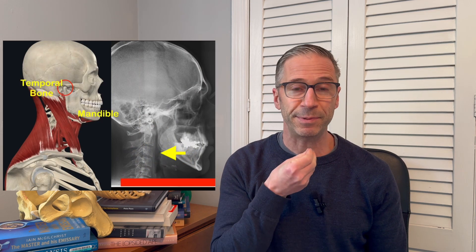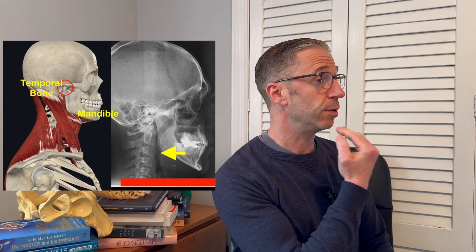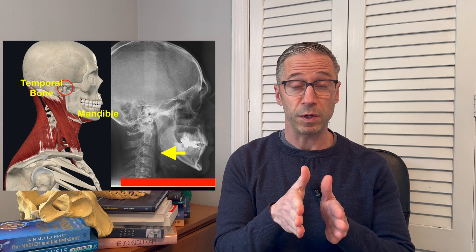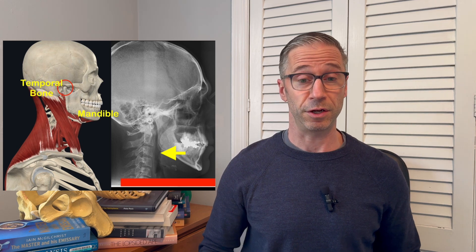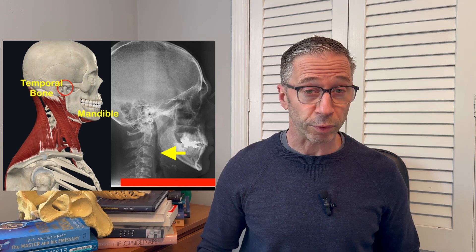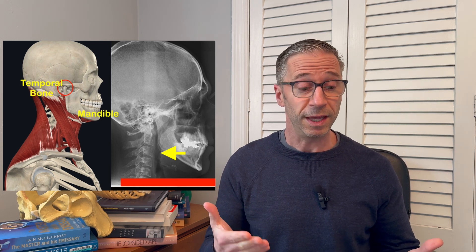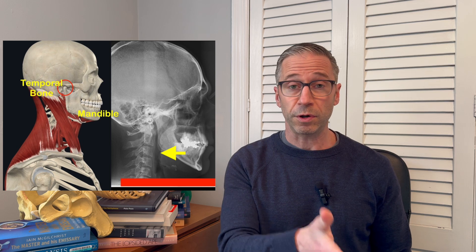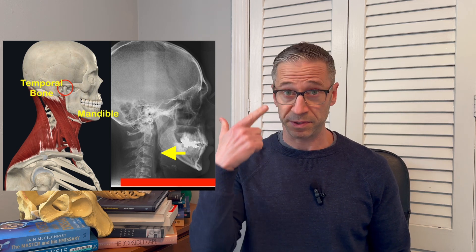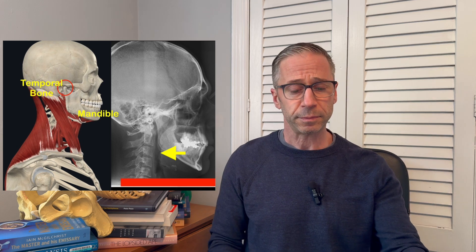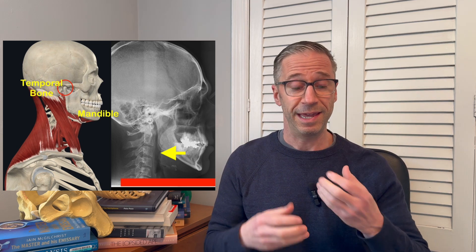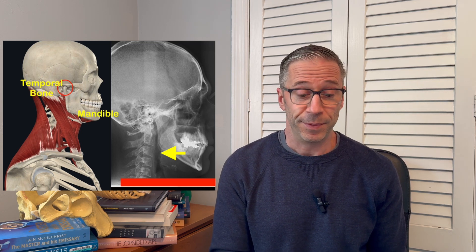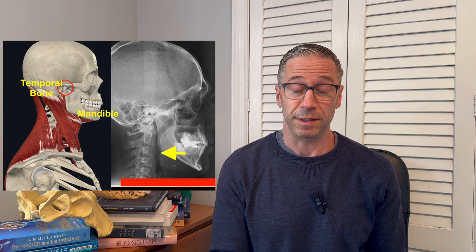Another problem with a straight neck is it can collapse the airway. When the head and neck come forward, quite often the jaw will end up too far back. Once the jaw ends up too far back, you start to collapse the airway. The only way you can start to breathe and open up your airway again is by extending your body underneath it or bringing your head and neck forward more — but that just puts you more into a forward head posture with extension. So when you lose the curve in your neck, you may end up with a jaw shifted too far back, a compressed airway, breathing issues, and sleep apnea.